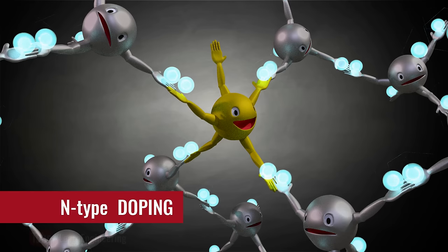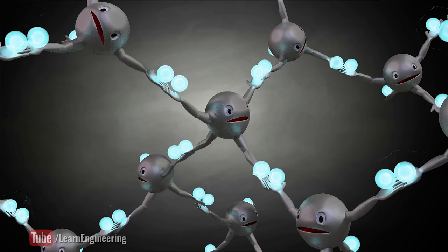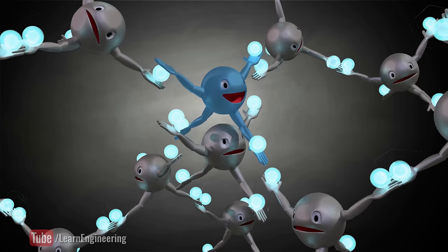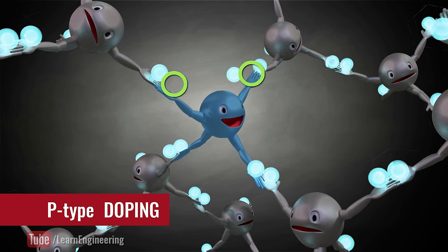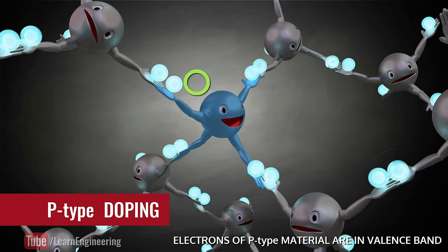On the other hand, if you inject boron with three valence electrons, there will be a vacant position for an electron. This vacant position is known as a hole, and a neighboring electron can fill this hole at any time. This electron movement is visualized as holes moving in the opposite direction. We call this p-type doping.